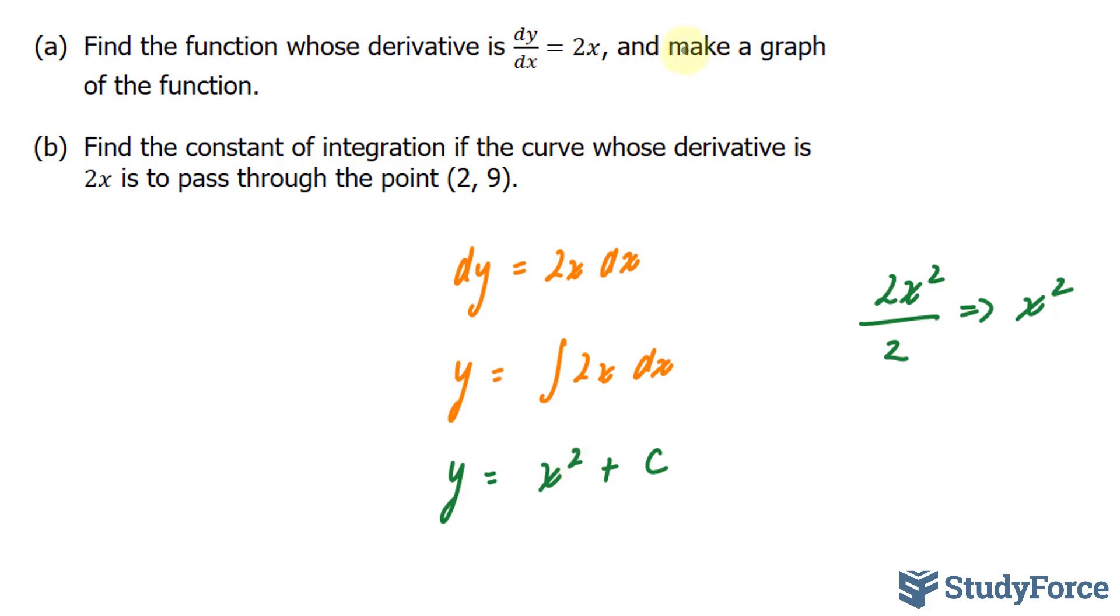So instead of going through random graphs of this function, I'm going to move on to part B, where they ask us to find a definitive graph for an equation passing through a point. The question reads, find the constant of integration this time if the curve whose derivative is 2x, which we know is this, passes through the point 2 and 9.